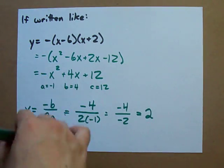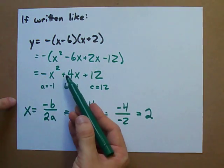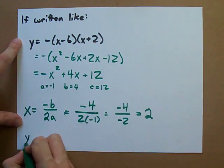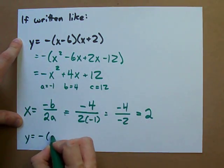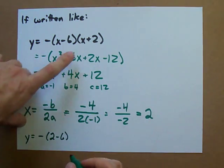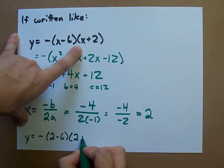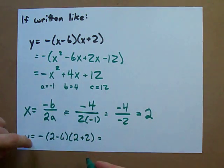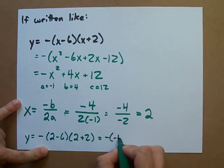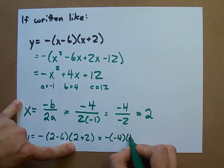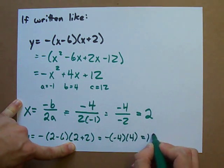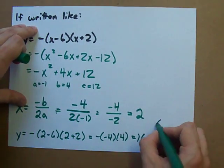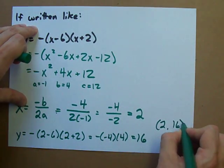And then, plug it back into the equation. It can be into this one, or this one. Doesn't matter. y is negative 2 minus 6 times 2 plus 2. I ran out of room. Forgive me for that. Negative, negative 4 times 4. I get positive 16. So, again, the vertex here is 2, 16.